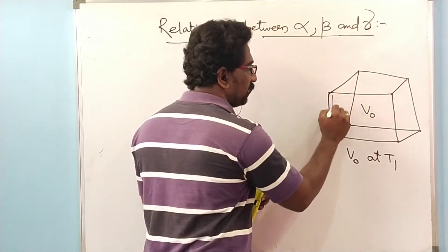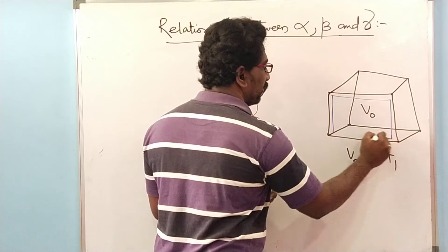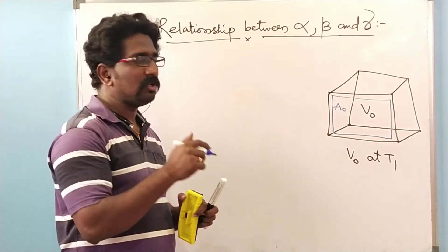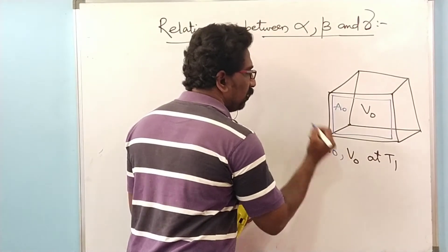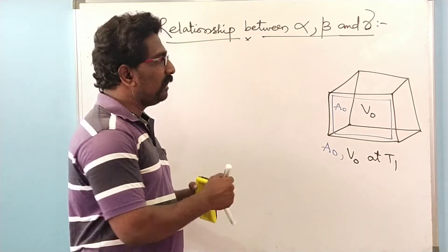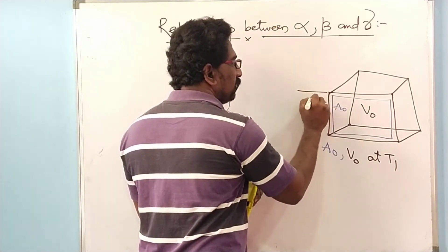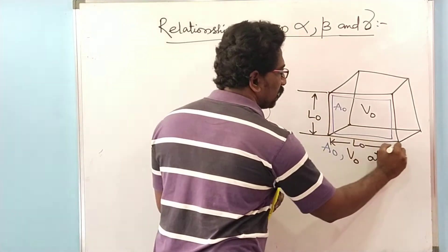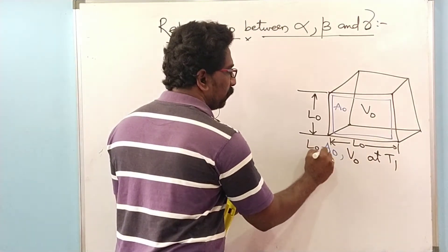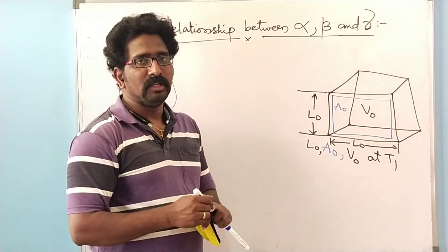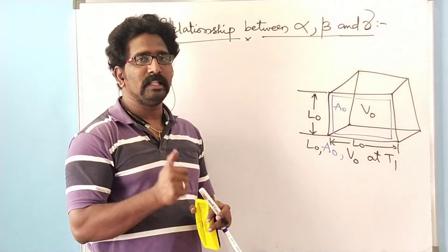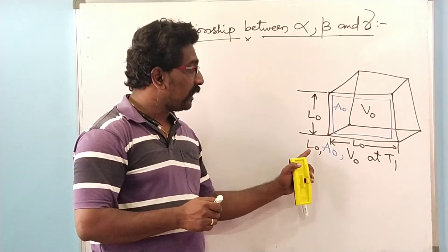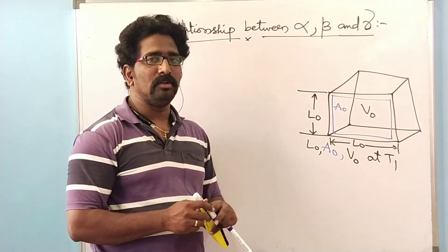Let the area of each face of the cube be A-naught, which is the initial area at temperature T1. In the same way, let the length of each side of the cube be given by L-naught. So L-naught is the initial length, A-naught is the initial area, and V-naught is the initial volume of the cube.